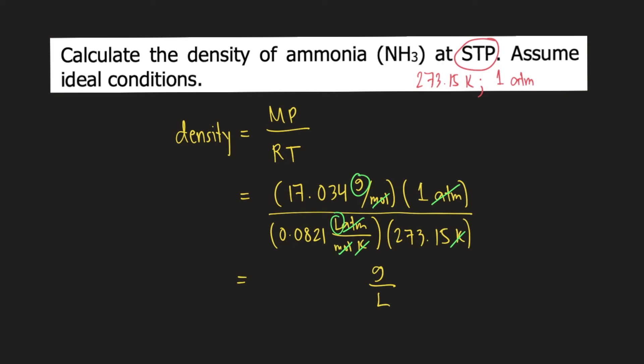And if you solve for the density of ammonia, this is equal to 0.76 grams per liter. And this is the answer to the question.